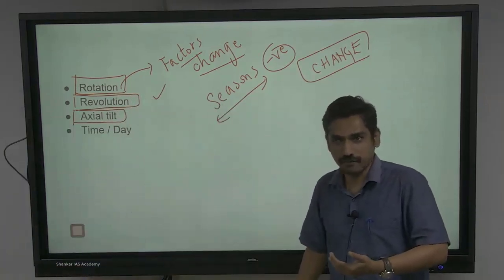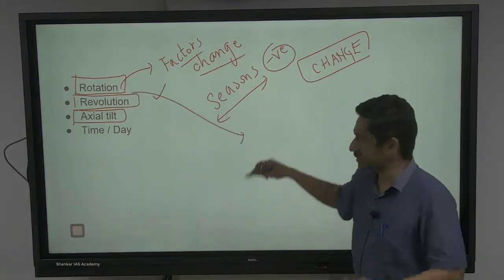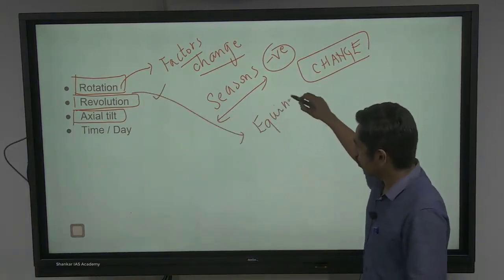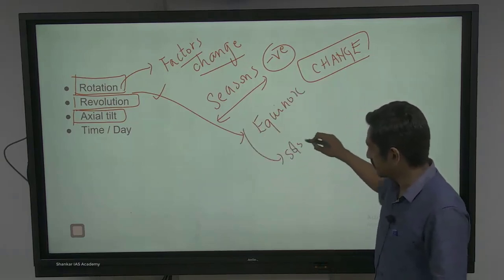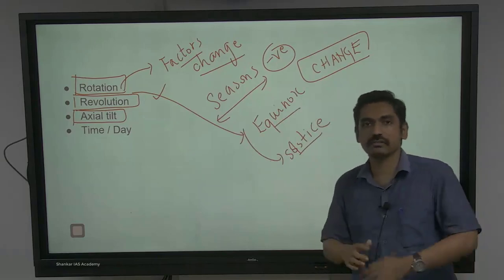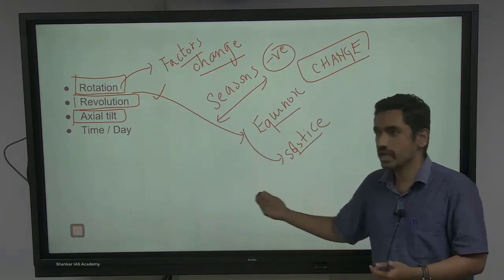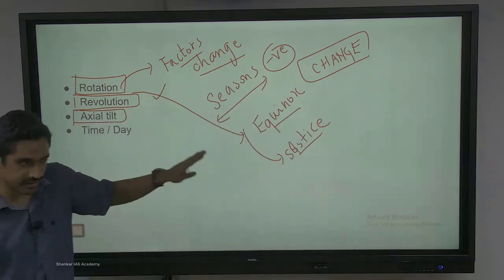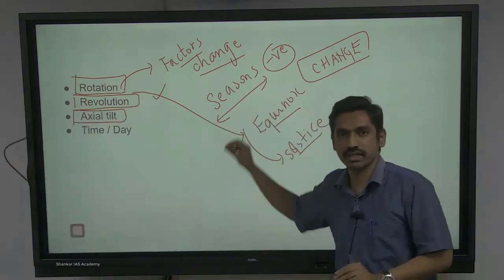Based on your revolution, you get questions on equinoxes and solstices. What exactly is an equinox? What exactly is a solstice? From equinox and solstice, you take your summer solstice — June 21st — that's where the question came from. UPSC hasn't gone anywhere — they've just touched your Class 6 basics, because that's what they expect when it comes to physical geography.